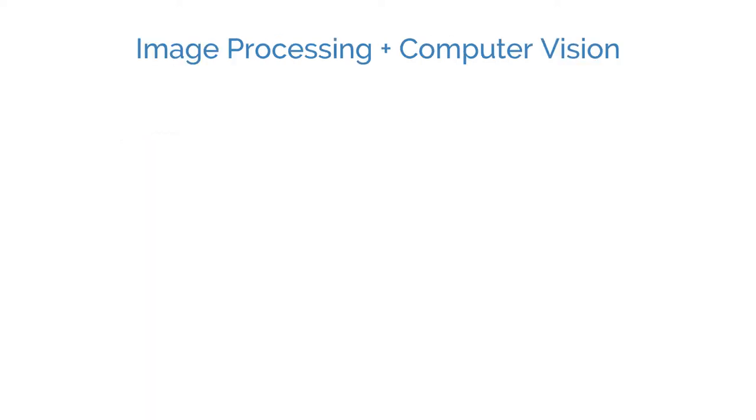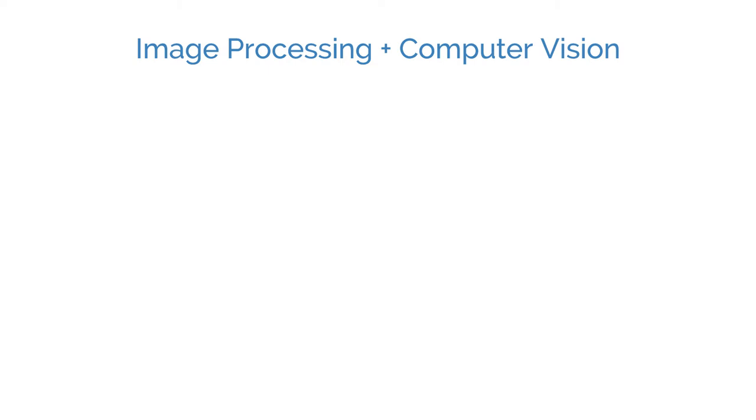Computer vision and image processing work together in many cases. Many computer vision systems rely on image processing algorithms. For example, computer vision systems rarely use raw imaging data that comes directly from a sensor. Instead, they use images that are processed by an image signal processor.